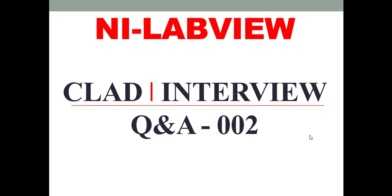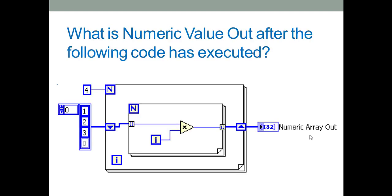Hello friends, welcome to Lab UQ&A lecture series. What is the numeric value of 'array out' after the following code has executed? We have a couple of for loops, an input array, and a shift register — what is the numeric array out after the code has executed?